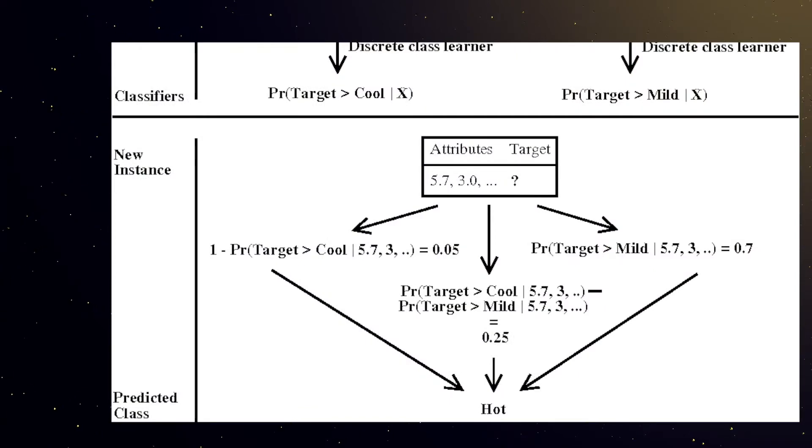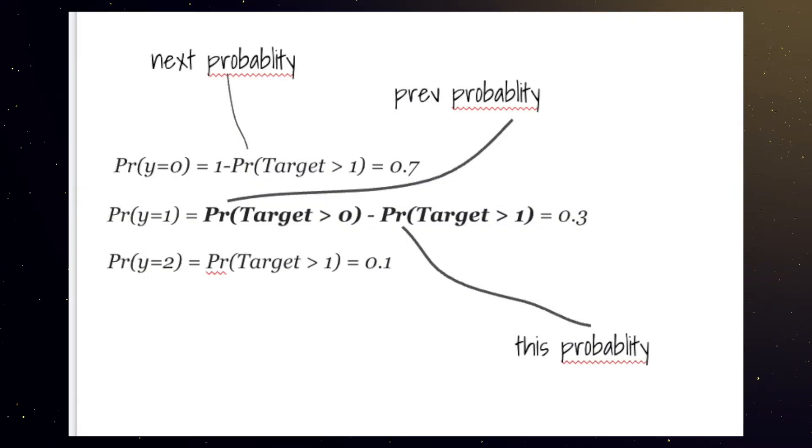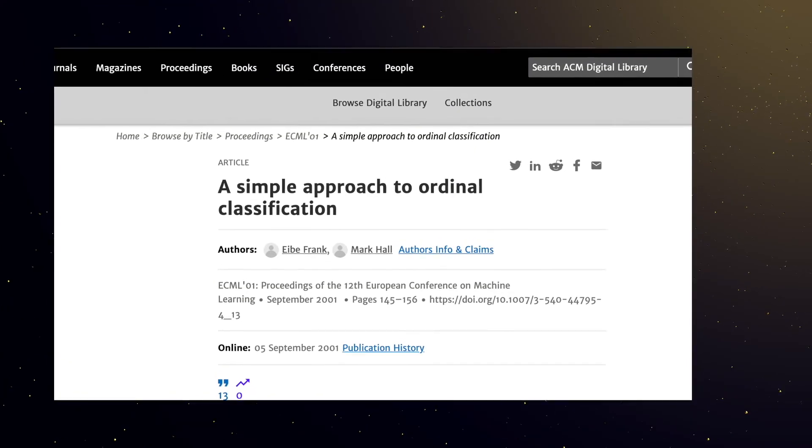The way the prediction works is taking the probability and taking the probability differences of one class to other classes. Now this is of course explained in a much better way in the paper, so I recommend you guys read that.